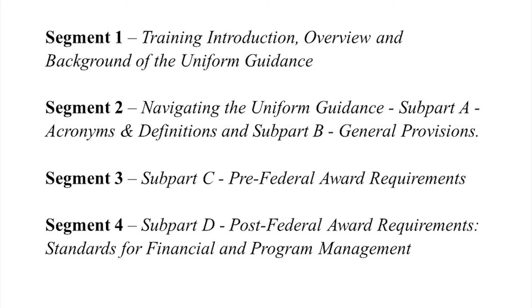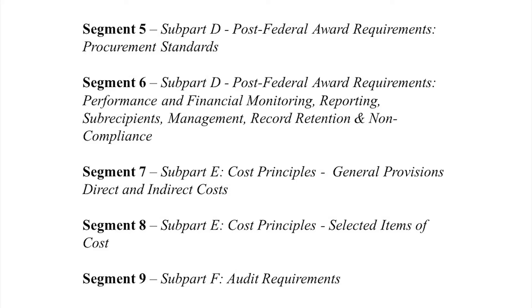Segment two looks at navigating the Uniform Guidance. Segment three covers pre-award requirements. Segment four is about post-award financial and program management. Segment five reviews post-award procurement standards. Segment six covers post-award monitoring and reporting, sub-recipients management, record retention, and non-compliance. Segment seven reviews cost principles, direct and indirect costs. Segment eight covers other cost principles. Finally, segment nine covers audit requirements.